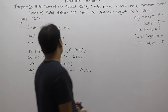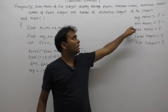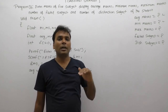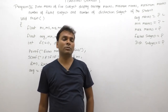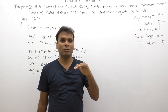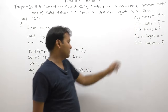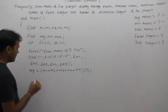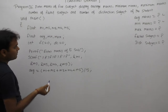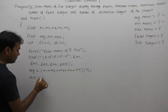Second case: find out minimum marks. Minimum means the smallest number among the 5 values. If you have 5 numbers M1, M2, M3 like that, find out the smallest. For minimum, initially by default consider minimum is M1.